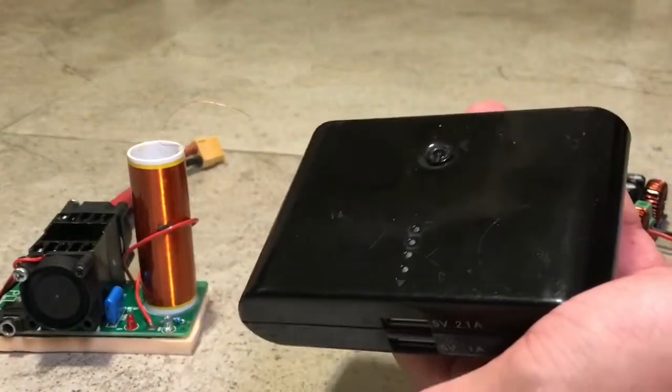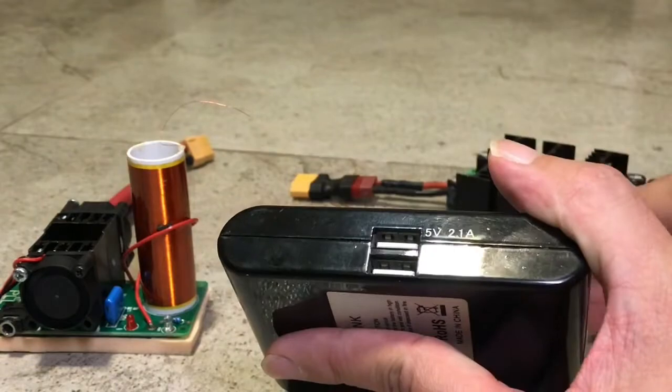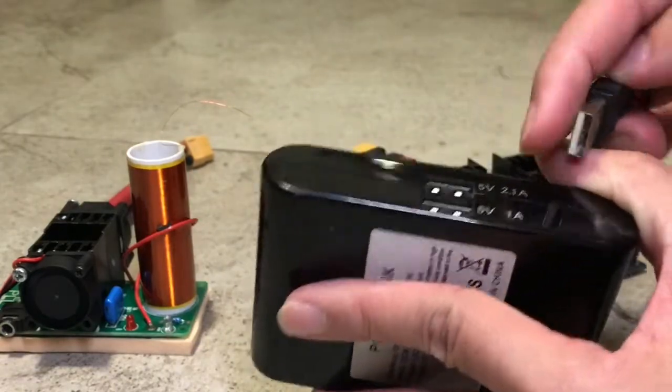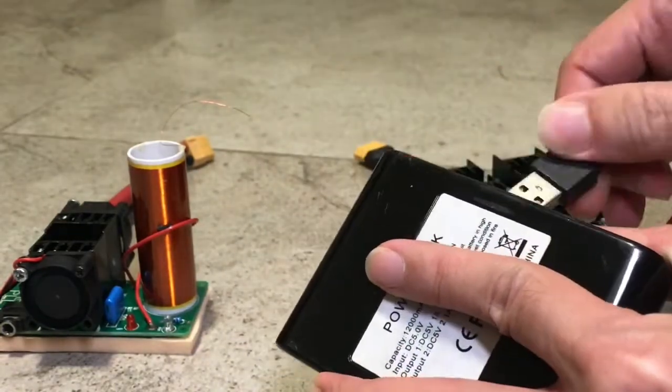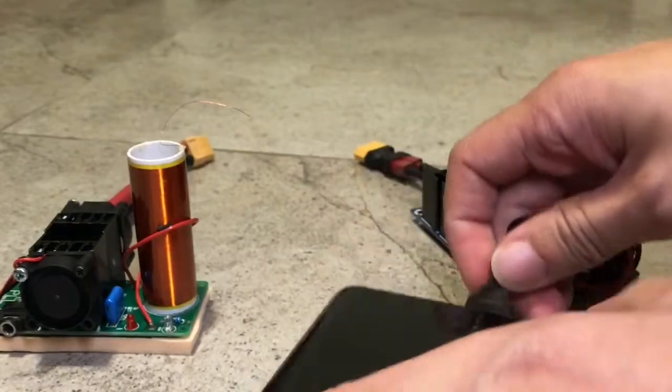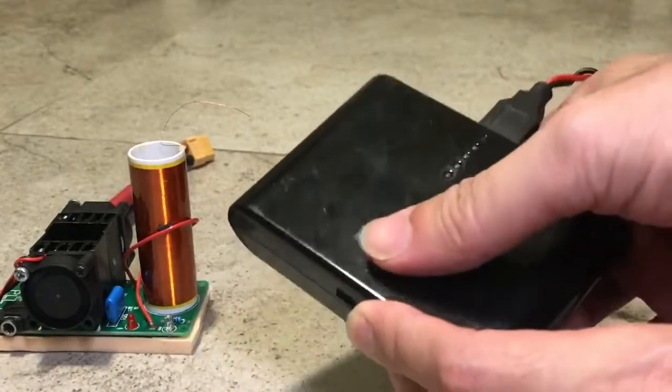Let's try a bigger power bank. Here I have a 12,000mAh power bank. Once again I'm going to hook up the USB to the high-speed charging port which is 2.1A.